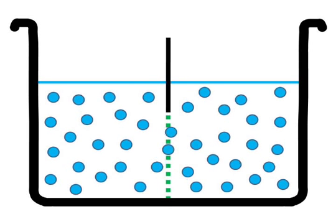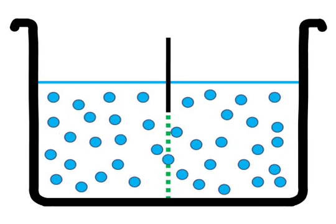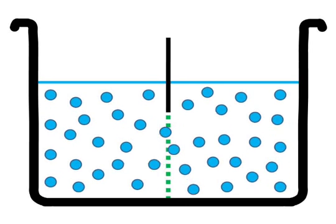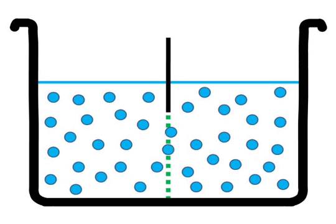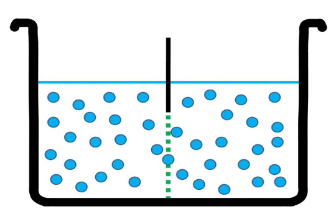In this illustration, a container of water is divided by a green semi-permeable membrane. Semi-permeable membranes allow the passage of water from one side of the membrane to the other, but they do not allow the passage of solute from one side to the other.